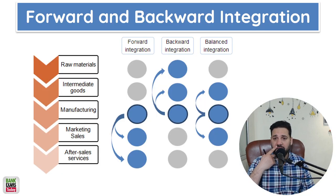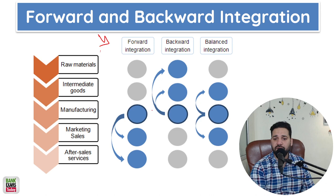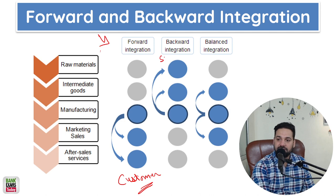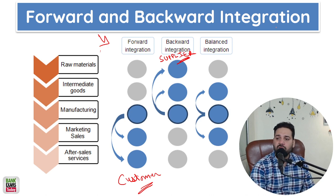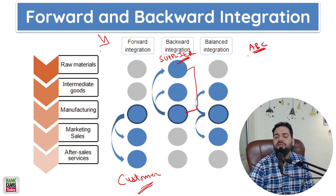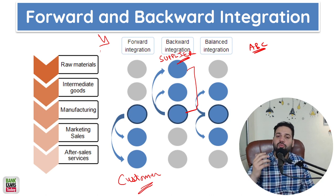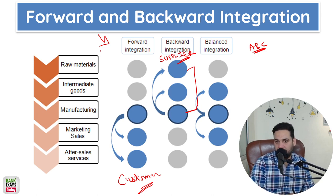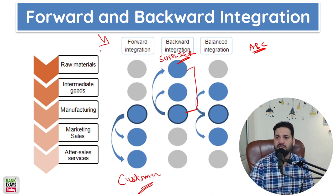Let's start with backward and forward integration. Forward integration means you are moving towards the customers; backward integration means you are moving towards the suppliers. For example, let's assume you are a coaching institute named ABC with 200 institutes. You need to provide study material to your students, so you bought a printing press — that is backward integration. A coaching institute buying a printing press to print their own study material is backward integration.